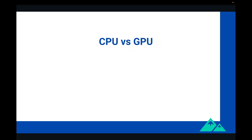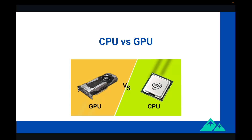The two main options you can consider today for your machine learning workloads are CPUs and GPUs. A CPU, or central processing unit, is a general-purpose processor that handles a wide range of tasks in a computer system, including running applications, managing the operating system, and performing mathematical calculations. CPUs are designed to be versatile and can handle many types of tasks, but they are not optimized for any specific type of workload.